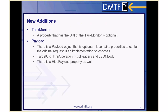There are a couple of new recent additions. One is a property that has the URI of the task monitor — purely optional, and an older implementation won't have it. There's also a payload object that is optional and contains properties of the original request. There's a hide payload property that may be set by some implementations so it never returns in the response body. The payload has a target URI property with the original URI, the HTTP operation as an enum of allowed Redfish HTTP operations, any headers supplied, and the original JSON body — all optional.